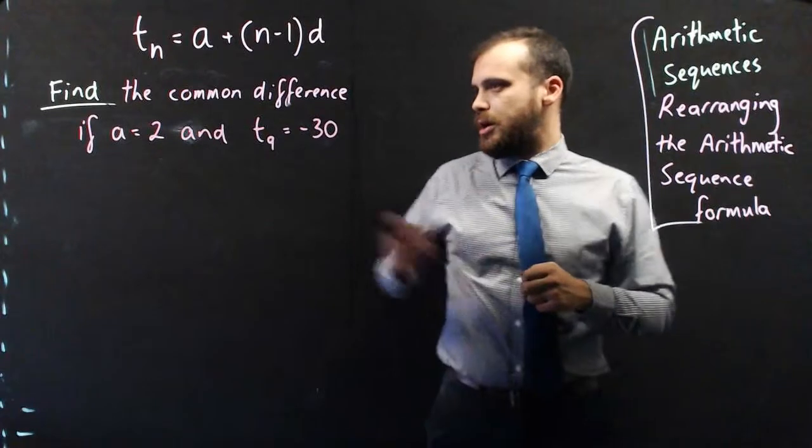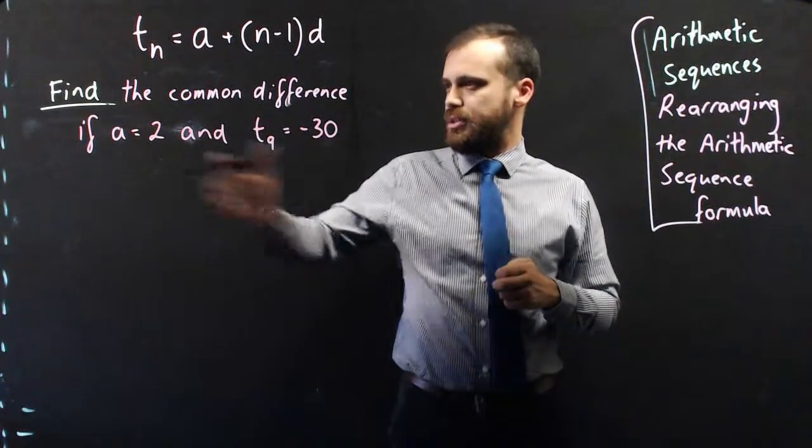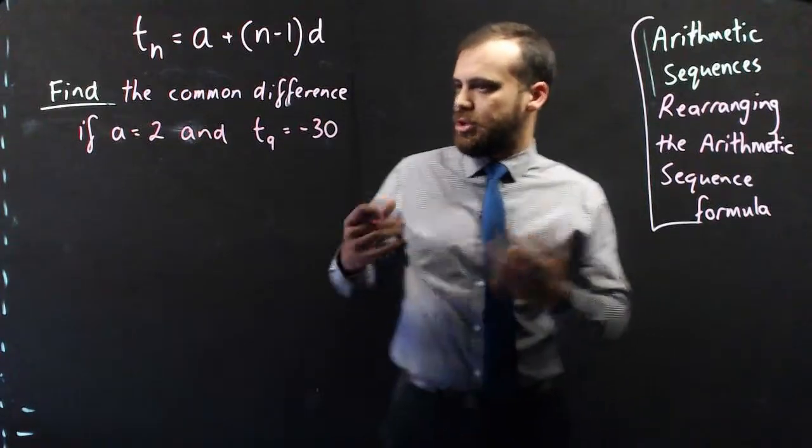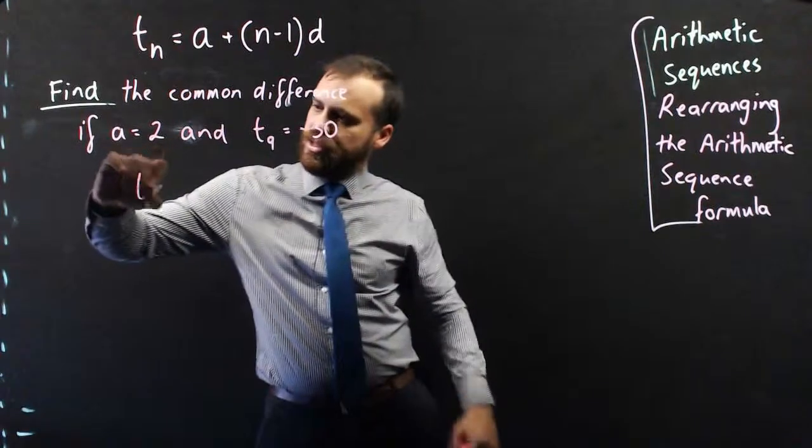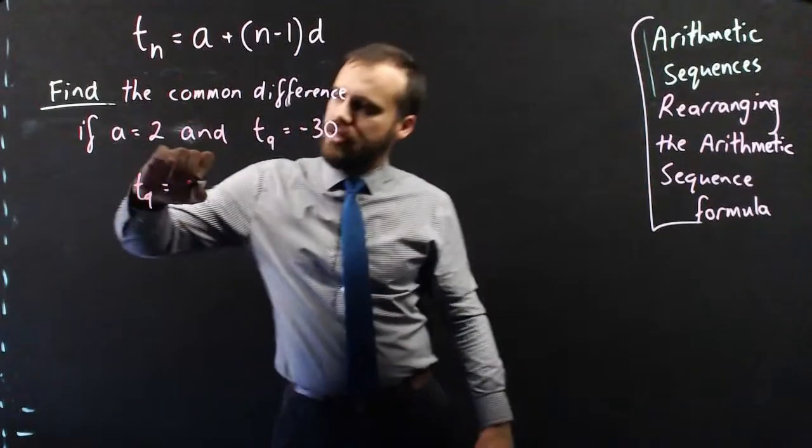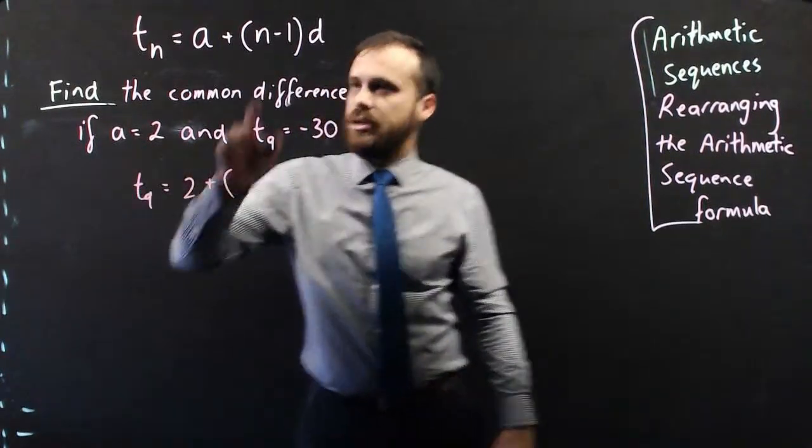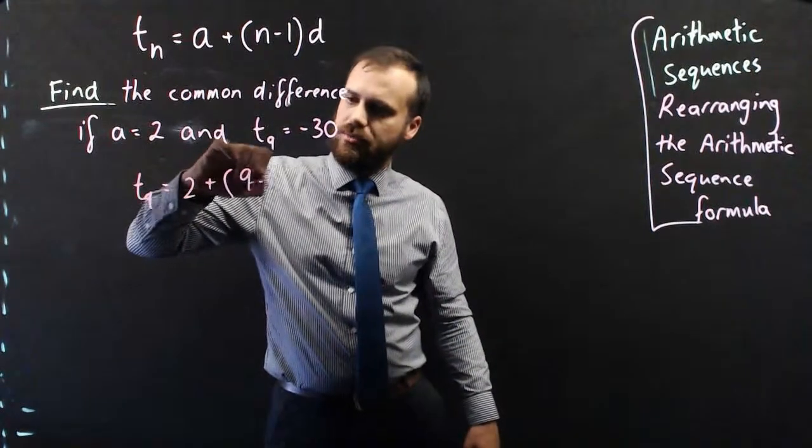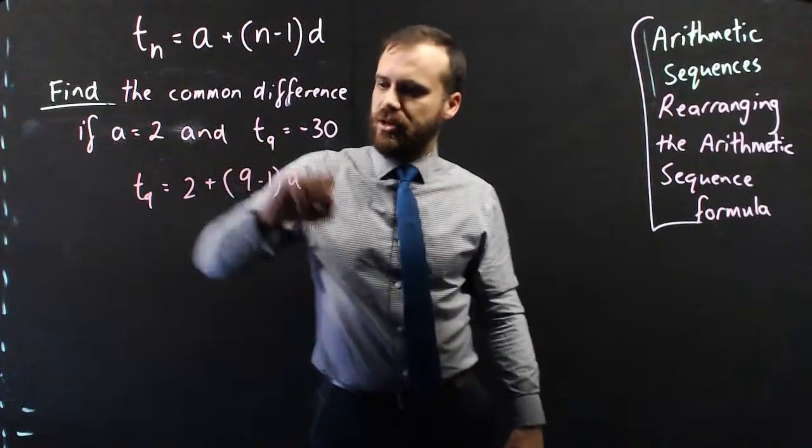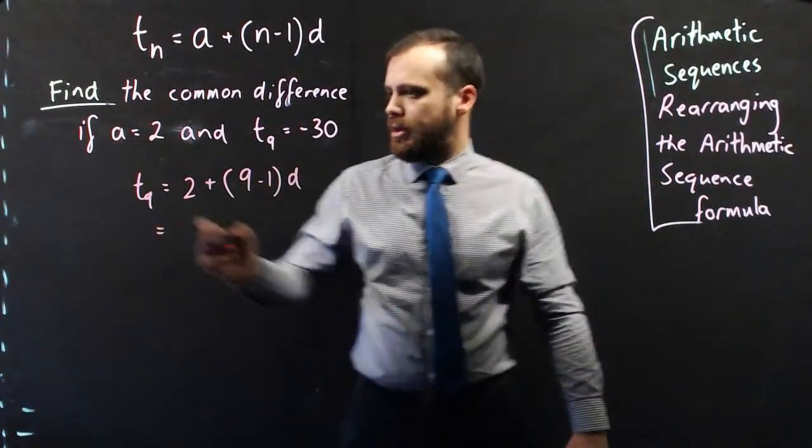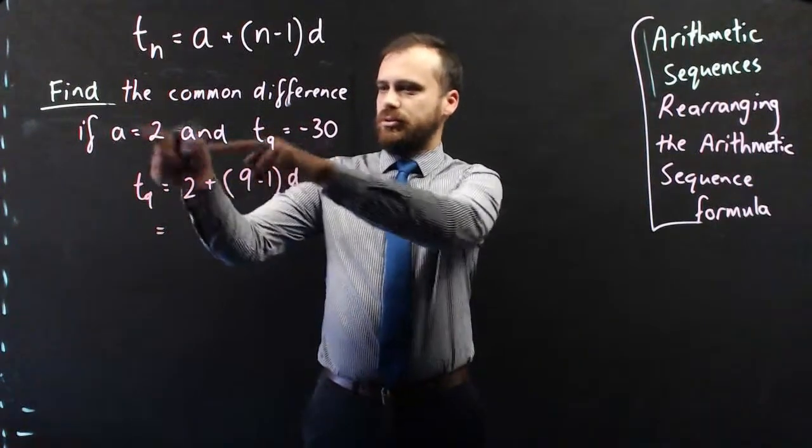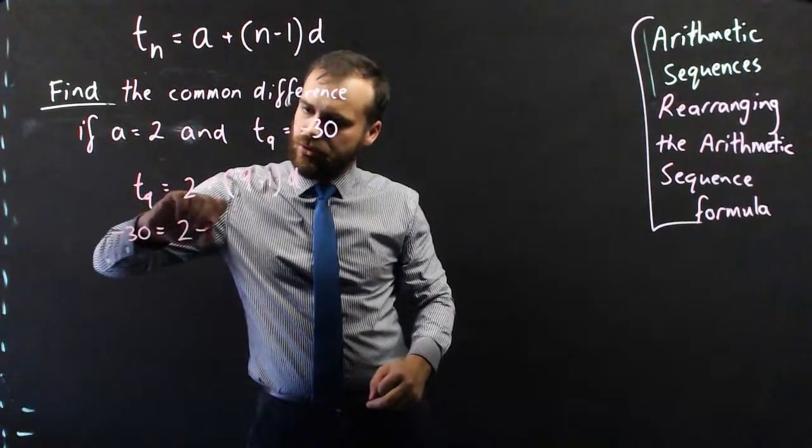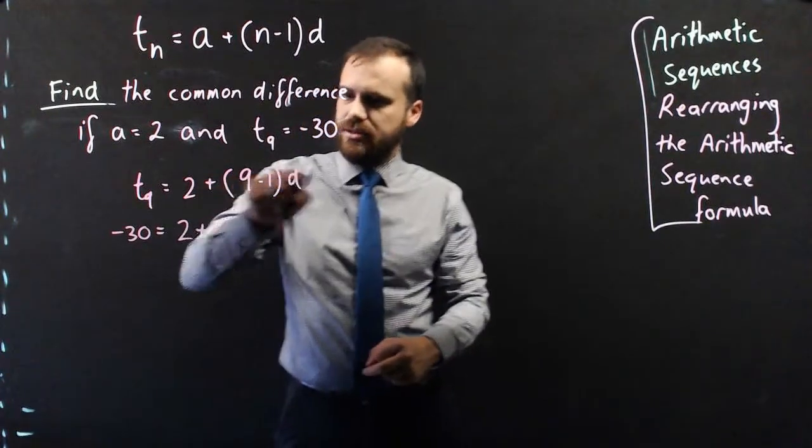Here's another question. Find the common difference if the first term is 2 and term 9 equals negative 30. So again, we're substituting in all our values. Term 9 equals A, which is 2, plus N minus 1. We're using term 9, so that's 9 minus 1, times the common difference D, which is what I don't know. Term 9 equals negative 30, so negative 30 equals 2 plus 8D.